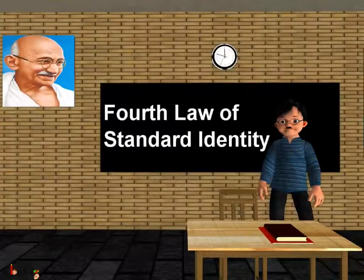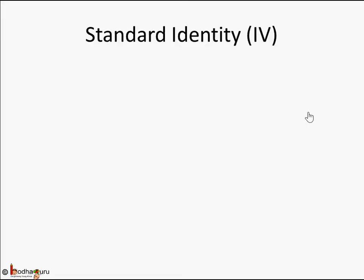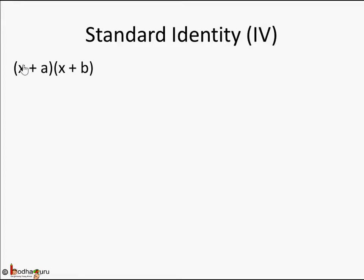Hello children, in this lesson we are going to learn Standard Identity 4. What is it? It is (x + a)(x + b). Remember, Standard Identities 1, 2, and 3 are laws where there are only two variables, a or b. Standard Identity 4 is about three variables: x, a, and b. So if you have an algebraic expression of the form (x + a)(x + b), how do we solve it?